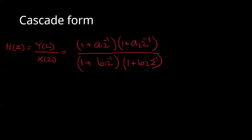The third form of realization is the cascade form. In the cascade form, we have a transfer function. We have to separate the roots — this is the third form. In the numerator: 1 plus a1 z-inverse, multiplied by 1 plus a2 z to the minus 1. This is the total second-order equation.